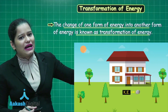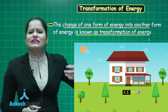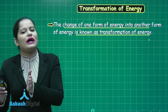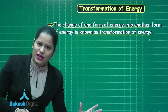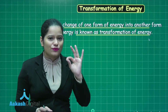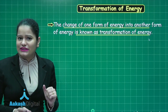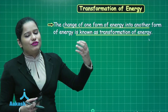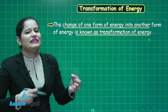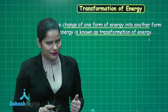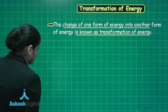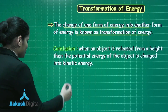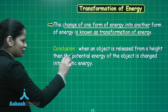As the stone falls it is moving, so it has kinetic energy. When it was at some height it had potential energy, and as it starts falling towards the ground that potential energy starts converting into kinetic energy. As the stone falls continuously, its potential energy decreases as its height decreases, and its kinetic energy increases as its velocity increases. So we conclude: when an object is released from a height, the potential energy of the object changes into kinetic energy.